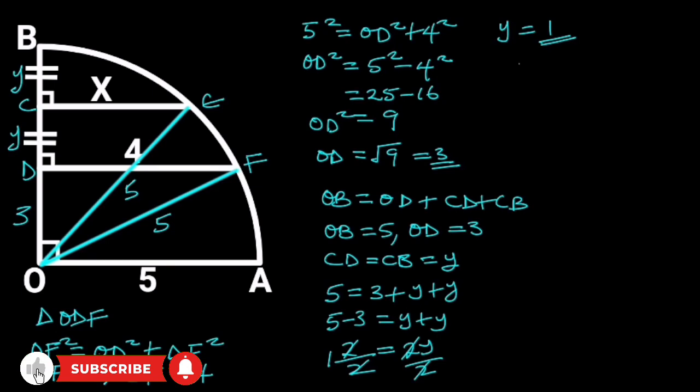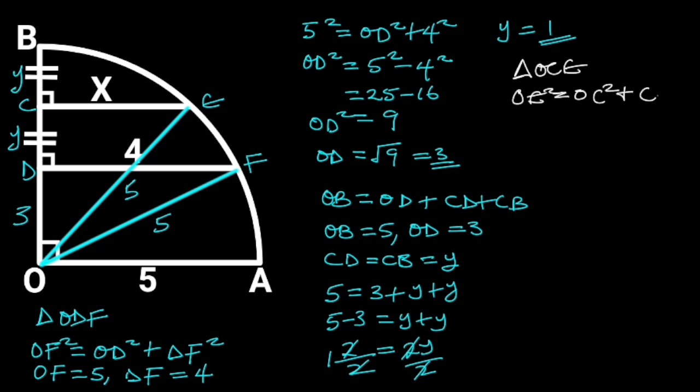Next, let's focus on triangle OCE. Triangle OCE is a right triangle. From Pythagoras theorem, OE squared is equal to OC squared plus CE squared. OE is equal to 5, and OC is equal to 5 minus 1, which is equal to 4.